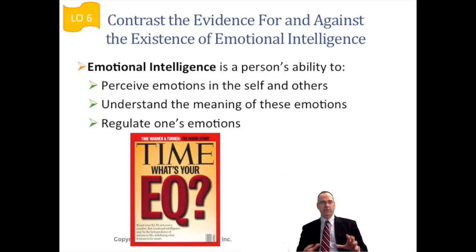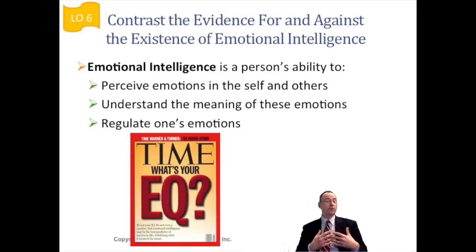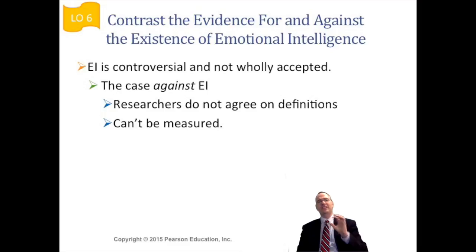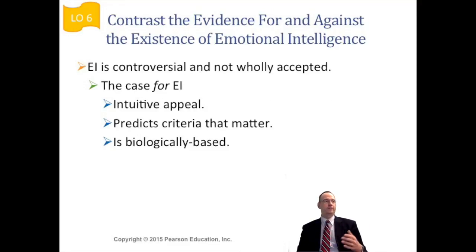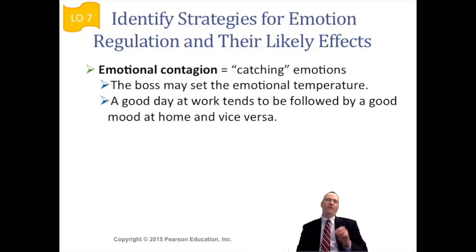Emotional intelligence is a key concept to wrap up with. Emotional intelligence is a person's ability to perceive others' emotions, tune into them, not trample on others' emotions, and regulate their own. That's very important. It's a little controversial — there's some evidence against it, such as difficulty in defining and measuring it — but there's also a good deal of evidence for it. Daniel Goleman, for example, has made a big part of his career dealing with emotional intelligence. Related to this, if you are the boss, you can create emotional contagion — people will actually catch your emotions.